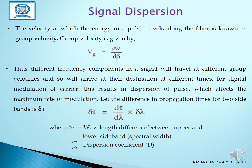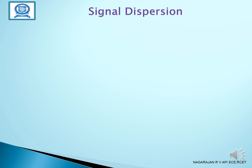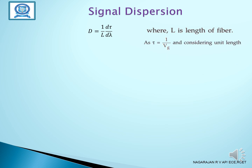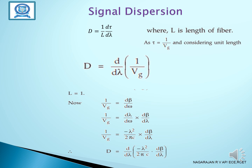This results in the dispersion of the pulse, which affects the maximum rate of modulation. The difference in propagation time for two sidebands, delta T, is equal to (d tau / d lambda) multiplied by delta lambda. Delta tau is the wavelength difference between the upper and lower sidebands, and D is the dispersion coefficient given by D = (1/L)(d tau / d lambda). L is the length of the fiber and tau = 1/Vg. Considering unit length, D = (d/d lambda)(−lambda² / 2 pi c)(d beta / d delta).